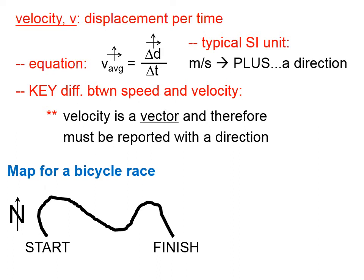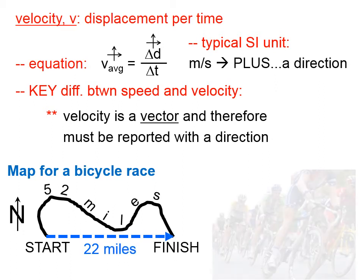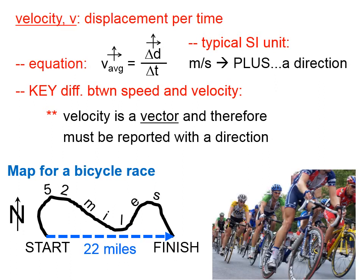So here's our bicycle race again. If we travel 52 miles along that curved route and we end up going 22 miles to the east, if it takes us 2 hours to do that,